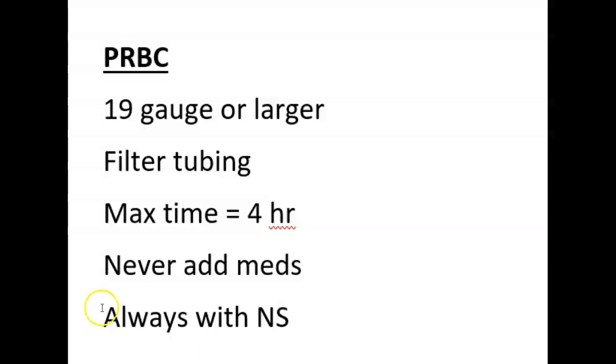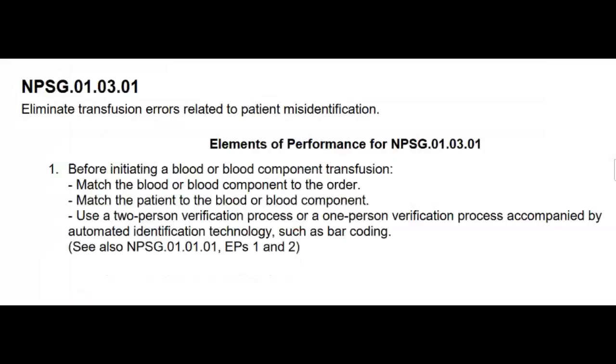If we look at our Joint Commission National Patient Safety Goals regarding blood transfusions, we want to match the blood and blood component to the order. Match the patient to the blood or blood product and use a two-person verification process or a one-person verification process accompanied by automated identification technology, such as barcoding. Some facilities require a second RN to verify blood products before you administer. Other facilities allow you to use a computer scanner to act as your second verification.